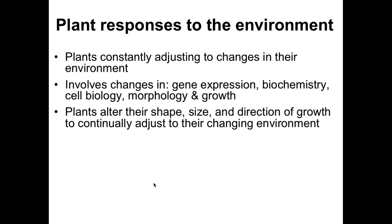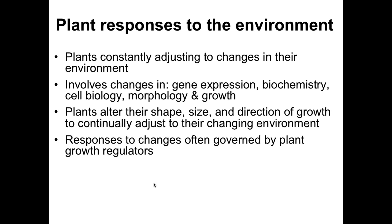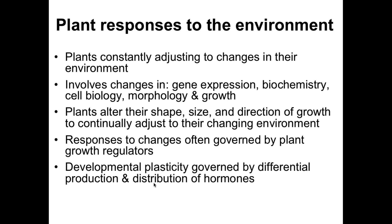Many of you have probably seen a plant growing in a shady area where branches on the lit side grow more than branches on the other side, and they'll actually turn to move towards the light. That's an example of a plant altering shape and direction of growth to adjust to its environment. These responses to changes are governed by plant growth regulators. My lab studies the plant hormone auxin, which is critical for every aspect of changing plant shape and direction of growth to adjust to stimuli. Developmental plasticity is governed by differential production and distribution of these hormones.